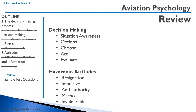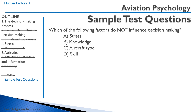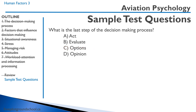The five hazardous attitudes are: resignation, impulsive, anti-authority, macho, and invulnerable. Which of the following factors does not influence decision-making? Stress — stress does influence decision-making. Knowledge — having knowledge influences how you make a decision. Aircraft type — that's the correct answer: aircraft type does not influence decision-making. And D is skill. What is the last step of the decision-making process? After situational awareness, options, and act — the last step is to evaluate. We want to see if our option is still the best option and whether it's panning out as planned. That concludes this lesson on aviation psychology. We'll see you in our next lesson.